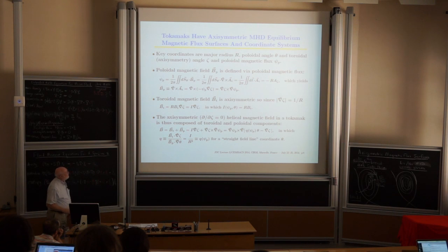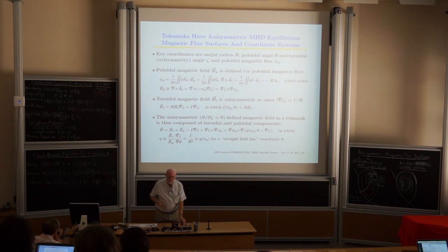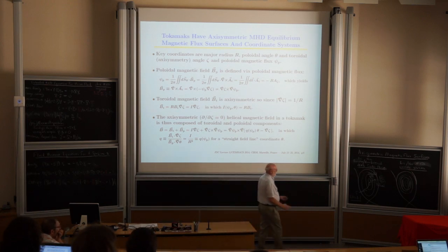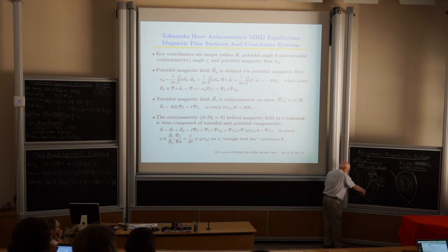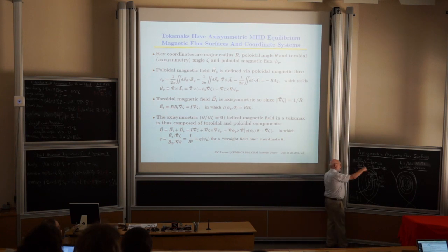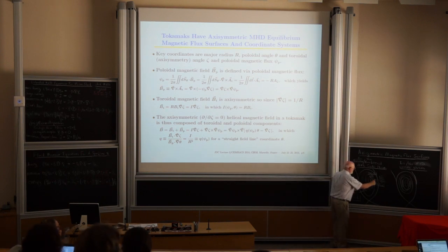The MHD equilibrium requires describing two types of magnetic flux. We have a toroidal direction going around inside the torus and a poloidal direction. For the poloidal magnetic flux to any given point, we draw a surface back to the magnetic axis and ask how much field passes through it. For the toroidal flux, we draw a surface and ask how much magnetic flux passes through that.